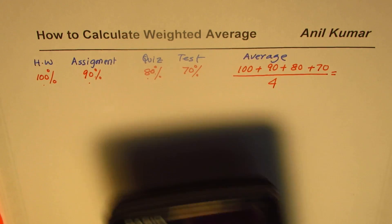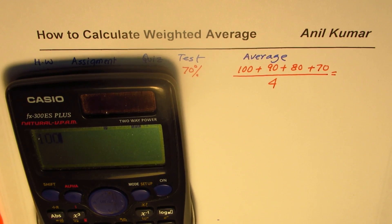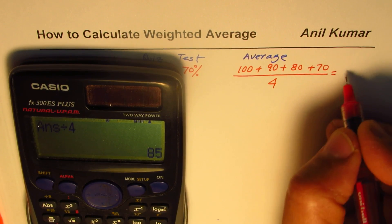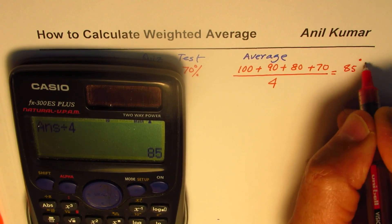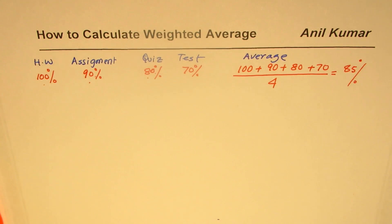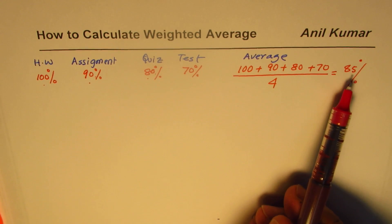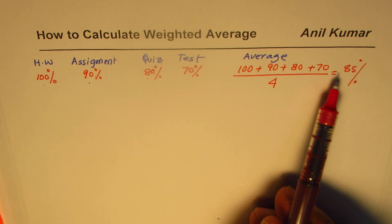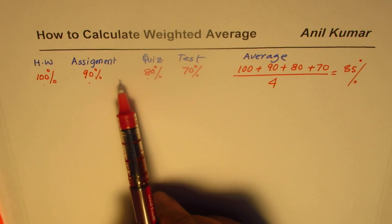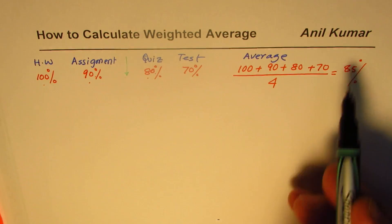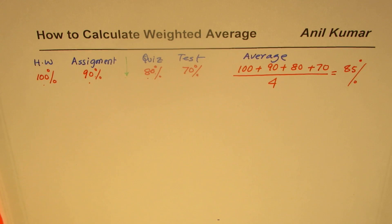So we have 100 plus 90 plus 80 plus 70, which equals 340. Divide by 4 and we get an average of 85 percent. You can clearly see that this average of 85 is kind of in the center of all four values.